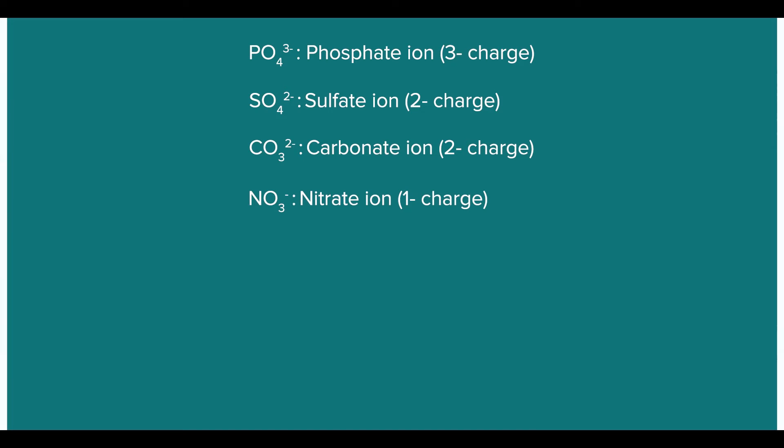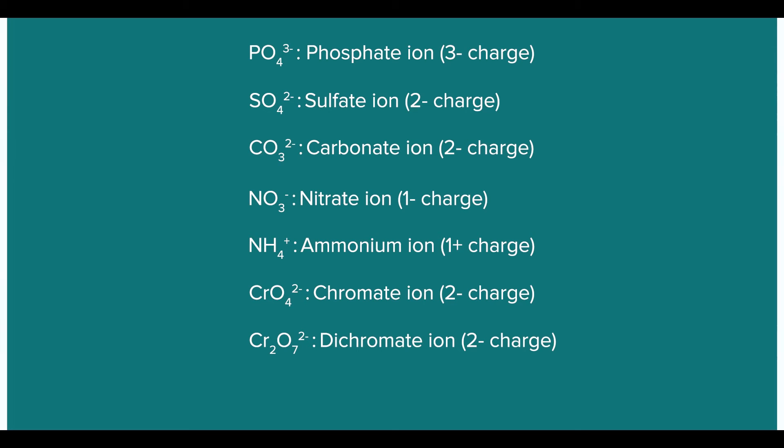What are some examples of such ions? Some common polyatomic ions include the phosphate ion with a minus 3 charge, the sulfate ion with a minus 2 charge, the carbonate ion with a minus 2 charge, the nitrate ion with a minus 1 charge, the ammonium ion with a plus 1 charge, the chromate ion with a minus 2 charge, the dichromate ion with a minus 2 charge, and permanganate ion with a minus 1 charge.